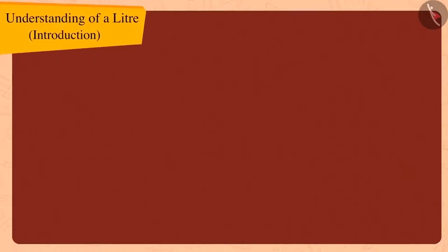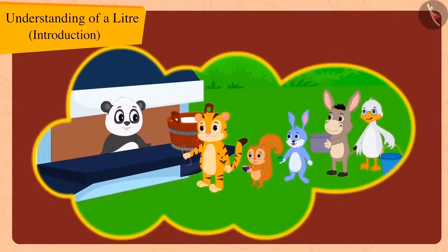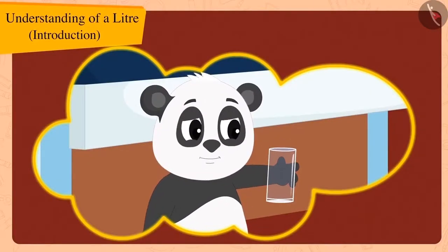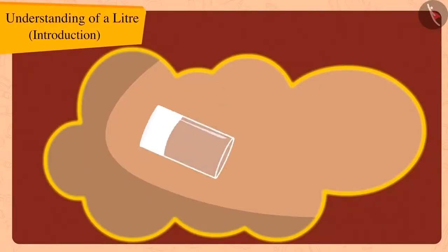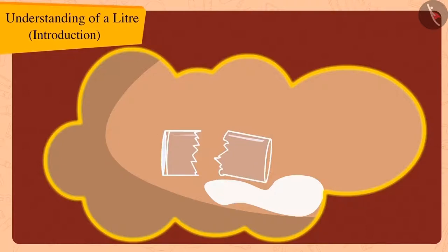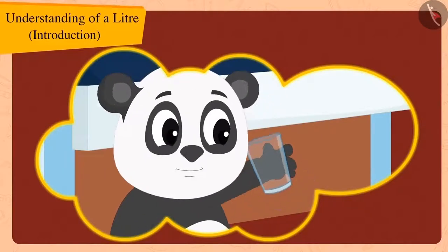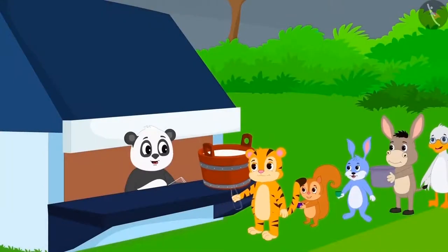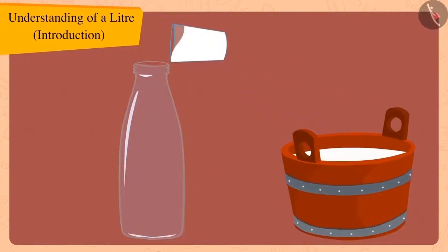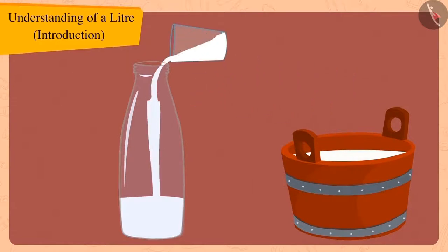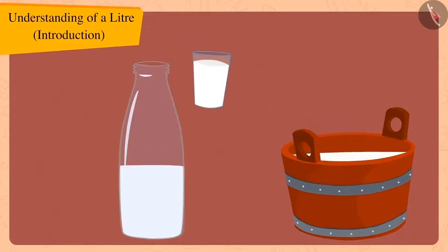Children, do you remember the long line outside Golu's dairy? Golu was very easily selling milk to all the people using his glass up till now. But suddenly, his glass broke yesterday and he had to buy a new glass. Today also, there is a long queue like usual outside Golu's dairy. Like every day, Golu dipped his glass in his big tub and filled it and started filling Shaykh Khan's bottle.